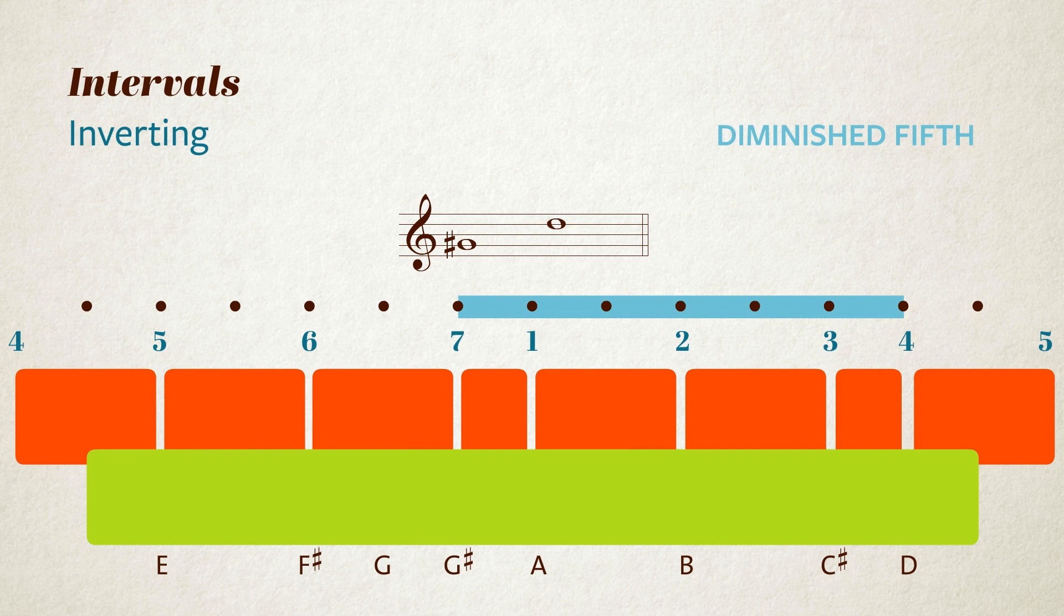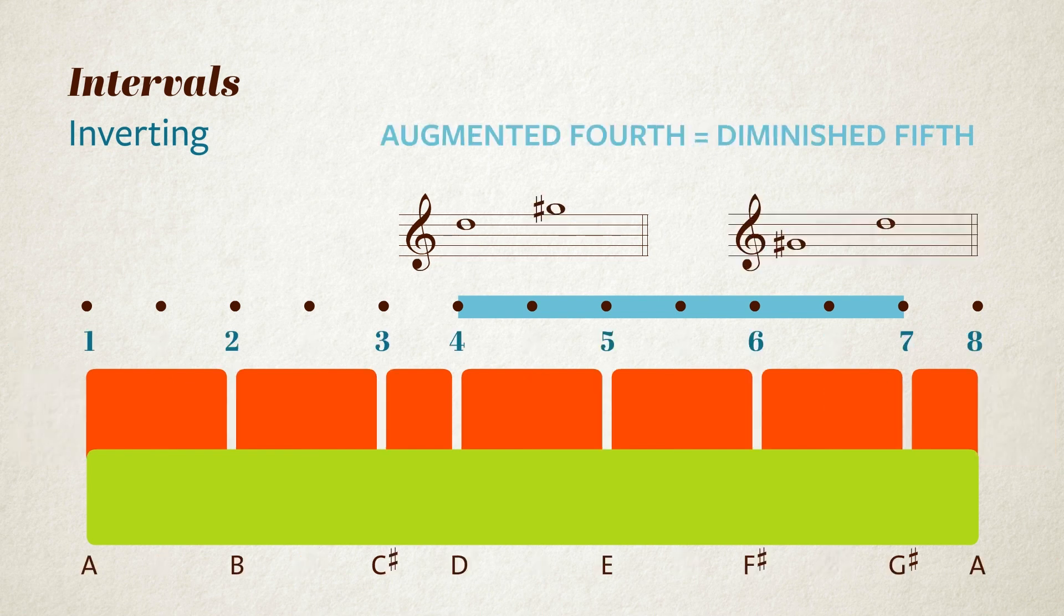More casually though, you might say it's a flat five or a flattened fifth. And of course, it's still a tritone. So, an augmented fourth and a diminished fifth are the same interval. They're both a tritone. But we change the naming of them depending on the note names we use to describe them.